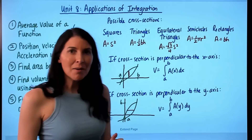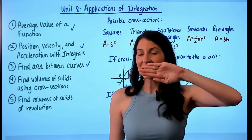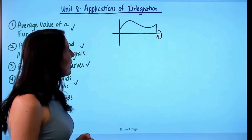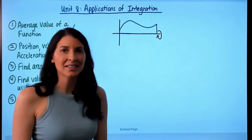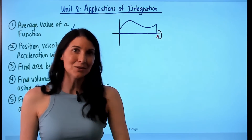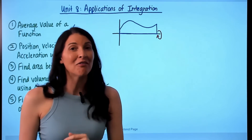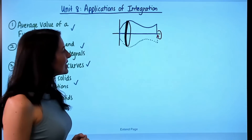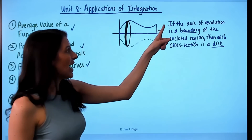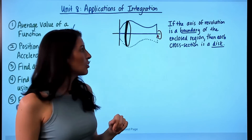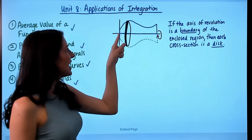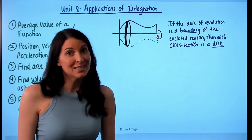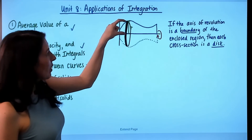Now let's talk about volumes of solids created by revolving a two-dimensional region. If you take f(x) and revolve it around the x-axis, each cross section will be in the shape of a circle — called a disk. This happens when the axis of revolution is a boundary of the enclosed region. The radius r is the distance from the function to the axis of revolution.